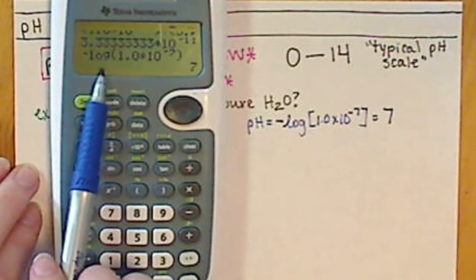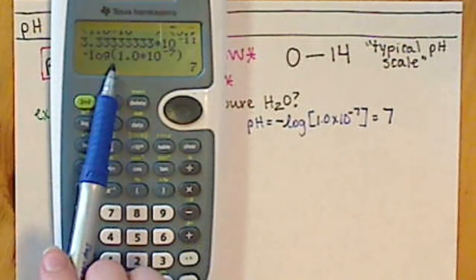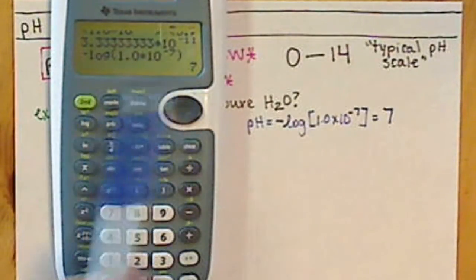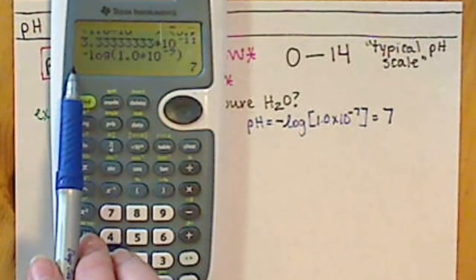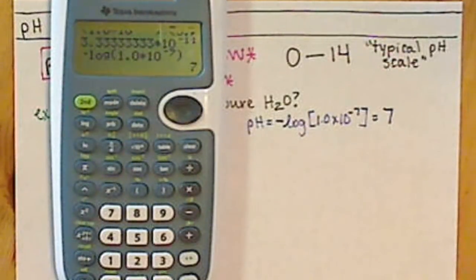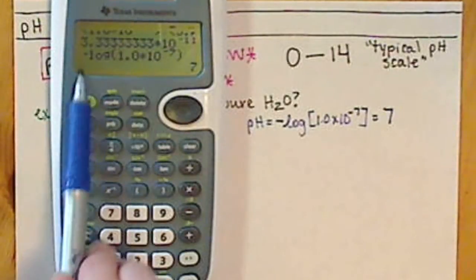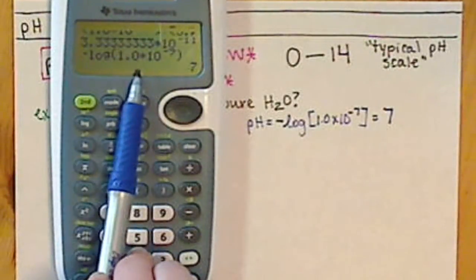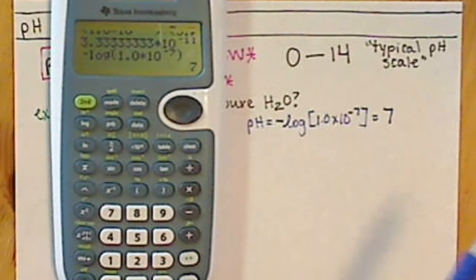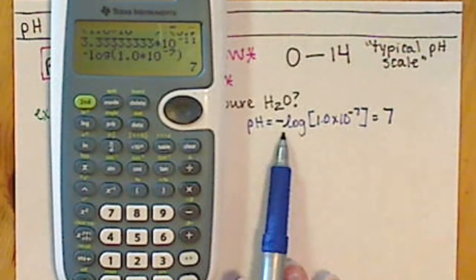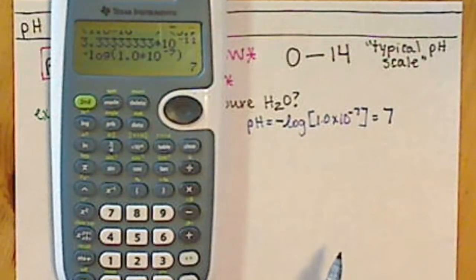On some calculators, you'll want to watch out: sometimes you hit your number in first, then hit the log button, then hit the negative. Sometimes you'll hit the log button, then your value, then the negative. You'll have to play around with your calculator to see what order to plug your numbers in. For more advanced calculators like graphing calculators, you type in the negative, press the LOG button, then your value. This example is a really good one to play around with to make sure you're getting the correct value.